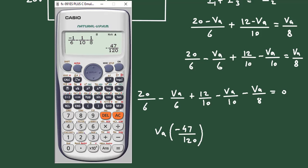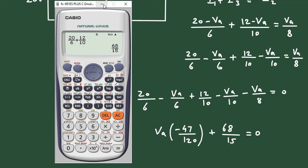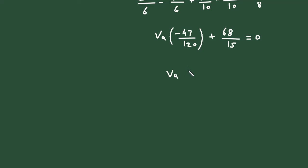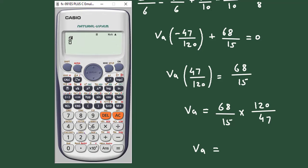Now solving the constant terms: 20 divided by 6 plus 12 divided by 10 equals 68 divided by 15. So we can write plus 68 divided by 15 equals 0. Taking this to the right side, VA times 47 divided by 120 equals 68 divided by 15. Therefore, VA equals 68 divided by 15 multiplied by 120 divided by 47.